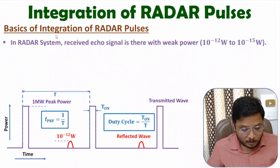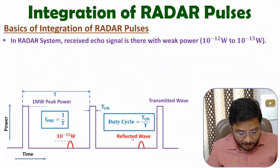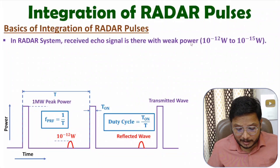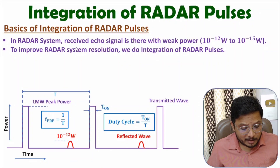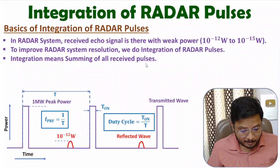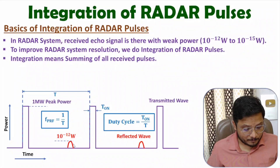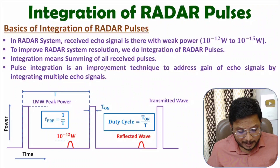In the integration process, we sum the reflected waves coming at the receiver side of the radar. The received echo signal has power in the range of 10 to the power minus 12 to 10 to the power minus 15 watts. With integration, we improve the resolution of the radar system by summing all received echo signals. Integration means summation of all received pulses — those pulses are very weak in strength, but by adding those amplitudes we can increase the strength of the received echo signal and optimize the range of the radar system.